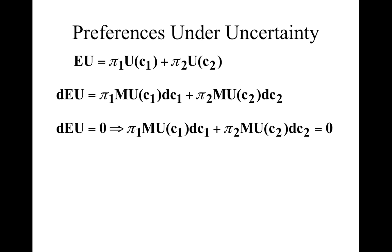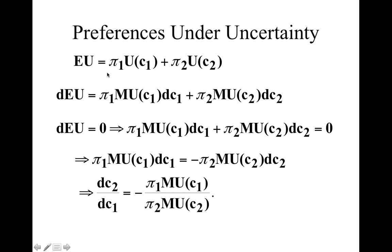Once we see that, we just solve for the slope. We know that the slope is going to be change in C2 divided by change in C1, because that's what we are looking at on the axes — rise over run. The slope equals negative of marginal utility from changing consumption in state 1 multiplied by its probability, divided by marginal utility of changing consumption in state 2 multiplied by its probability. So the slope of the indifference curve is the ratio of marginal utilities, multiplied by the probability of each state occurring.